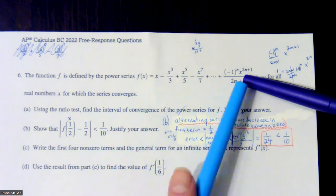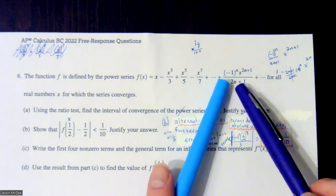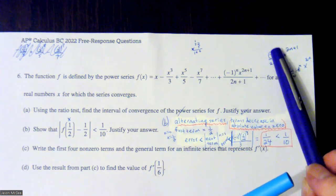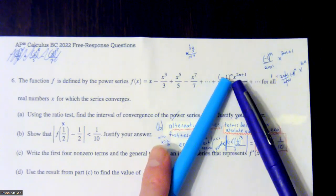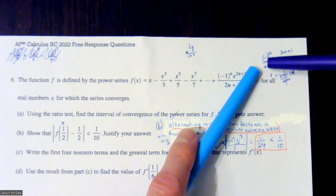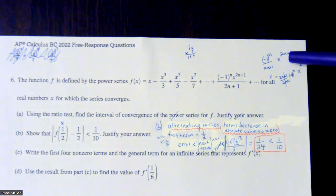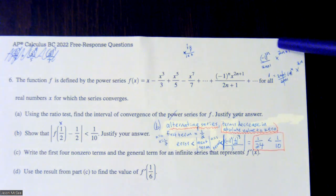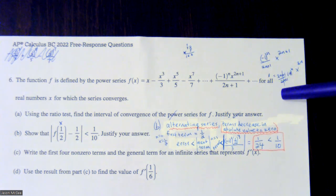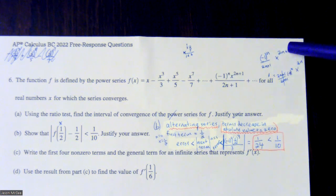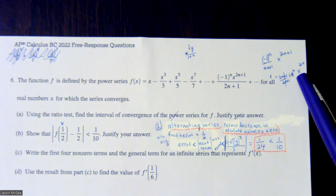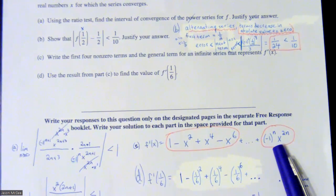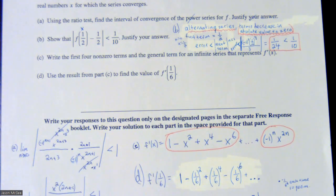For the general term, start from the original general term of f(x). The factor negative one to the n over 2n+1 is just a number in front of x raised to a power. Taking the derivative using the power rule: multiply by the power 2n+1, which cancels the 2n+1 in the denominator, then decrease the power by one — so x to the 2n+1 becomes x to the 2n. The result is negative one to the n times x to the 2n — that is the general term for f'(x).